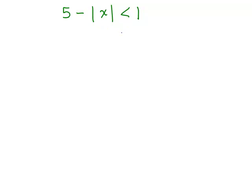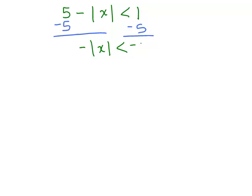So we want to isolate the absolute value sign. How about if I subtract 5 from both sides? There's more than one way to do this. Be careful — you've got a minus sign in front of the absolute value of X.